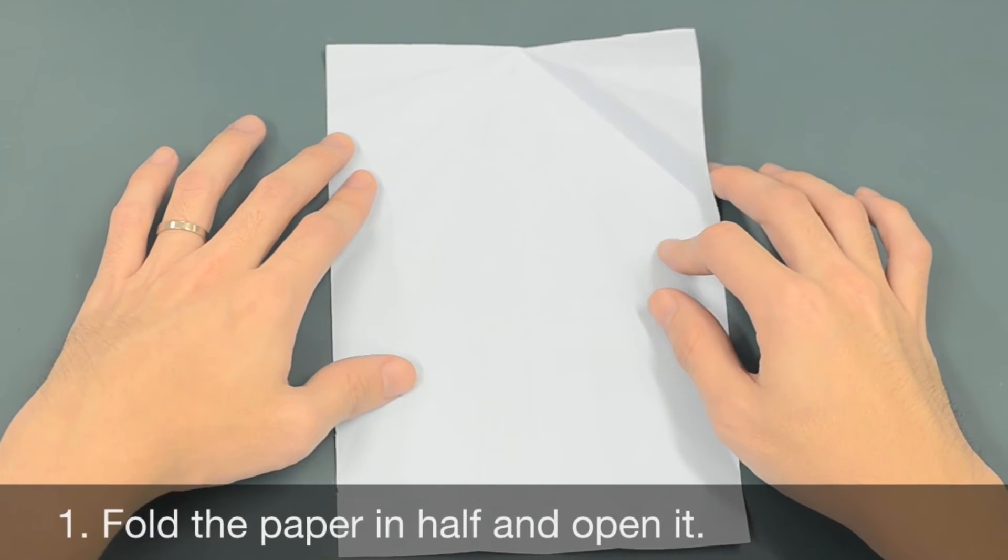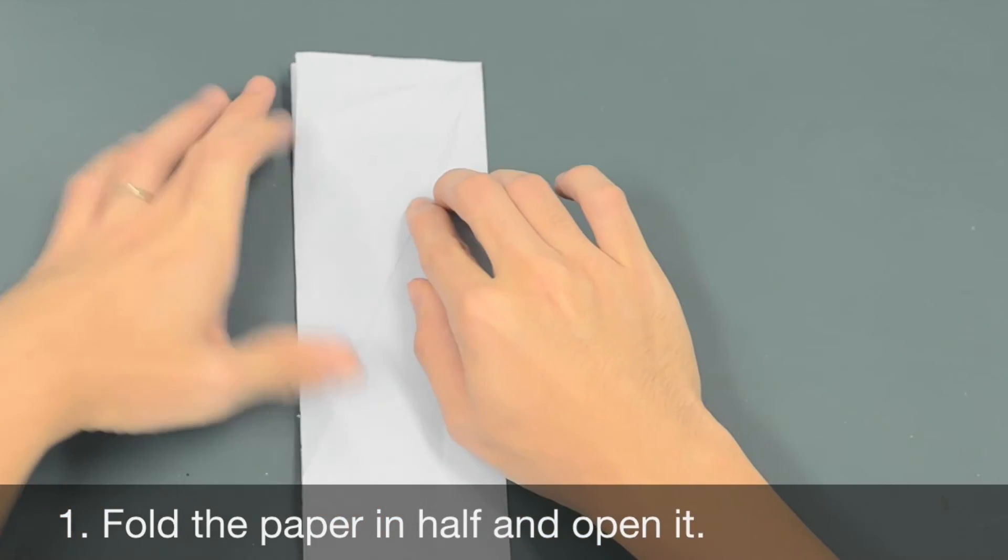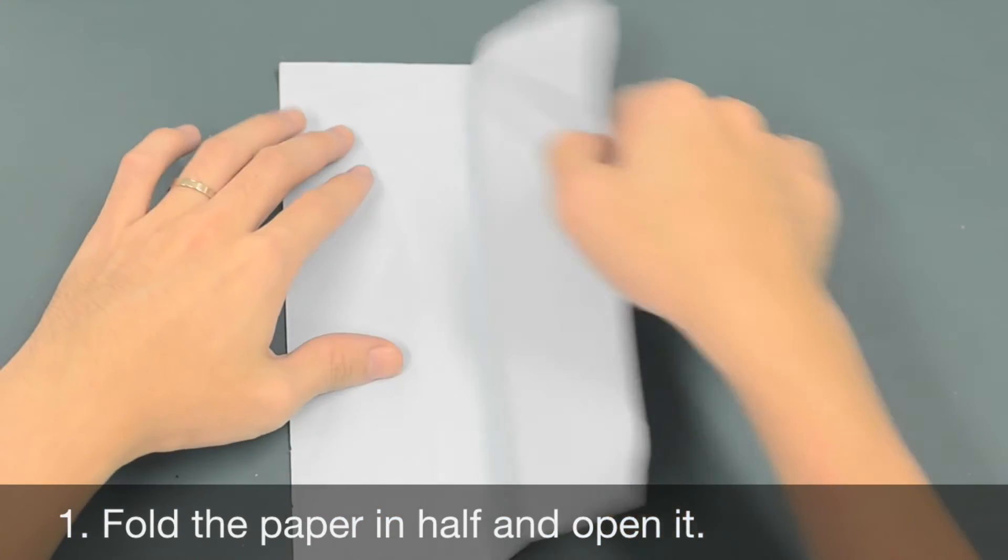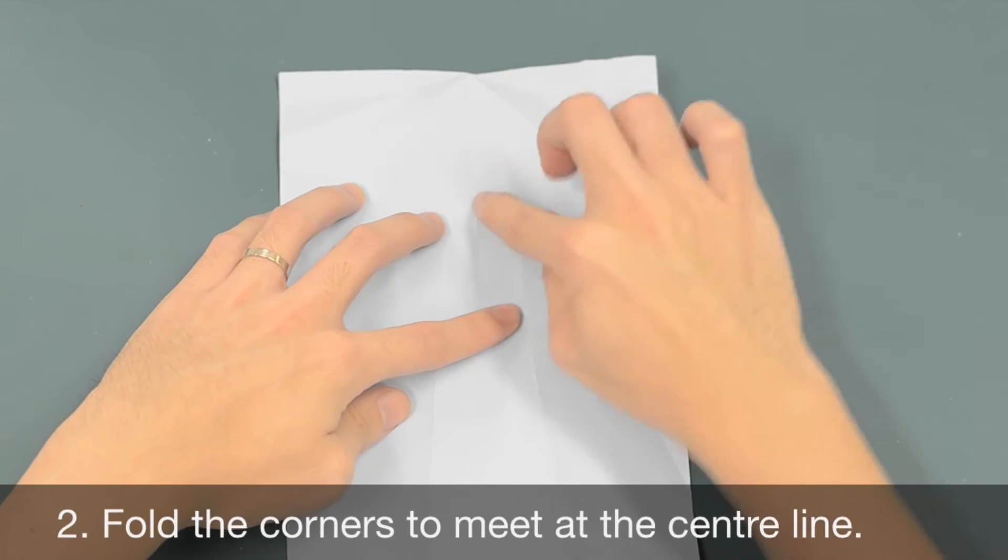First, fold the paper in half and open it. Next, fold the corners to meet at the center line.